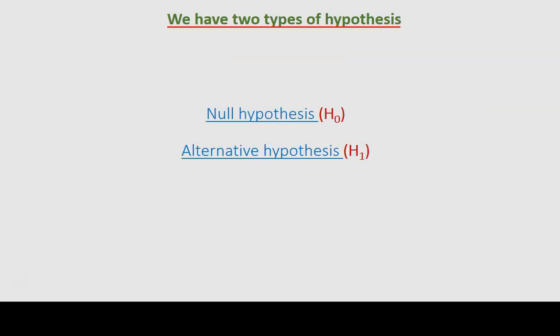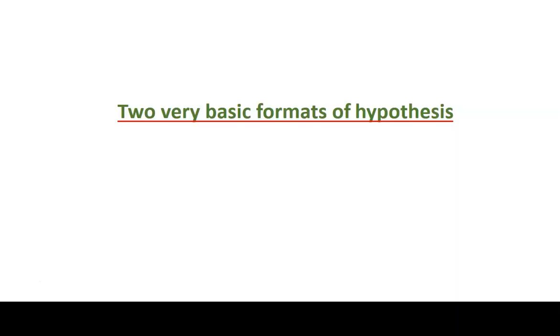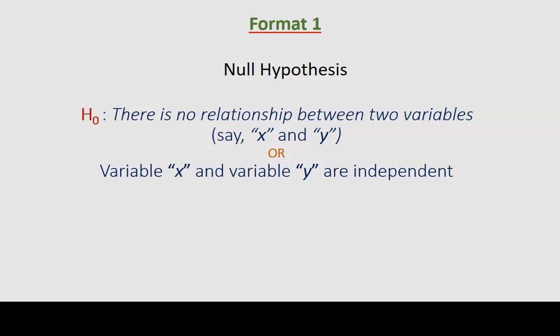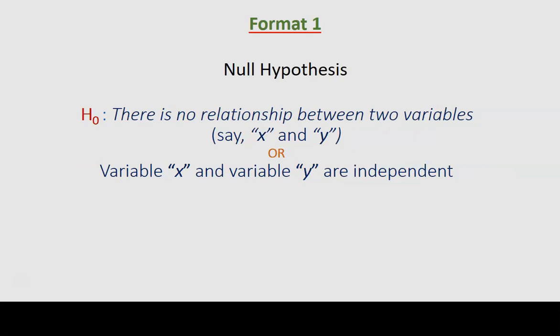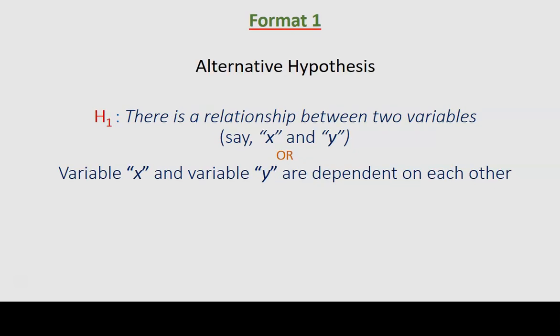We have two types of hypothesis: one is the null hypothesis, the other is the alternative hypothesis. We have two basic formats. Format one is written as: there is no relationship between two variables — for example, x and y — or equivalently, variable x and variable y are independent. The alternative hypothesis for this null hypothesis would be: there is a relationship between x and y, or variable x and variable y are dependent on each other.